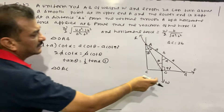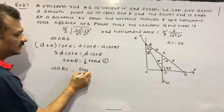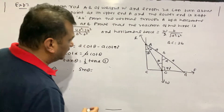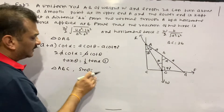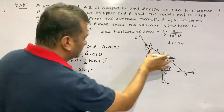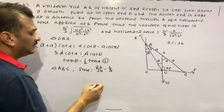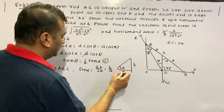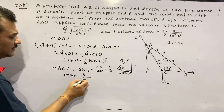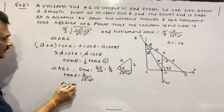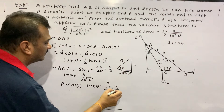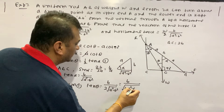In triangle OAC, sin theta is equal to... In triangle ABC, sin alpha equals 2b over the hypotenuse. We write 4a squared minus 4b squared.